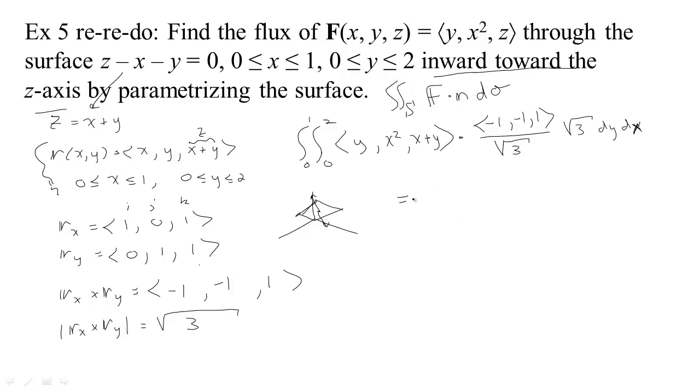So what integral do we actually have to do? Well, the square roots cancel, and I just need to compute this dot product. From 0 to 1 and 0 to 2: y times negative 1 would be negative y, negative 1 times x squared would be negative x squared, and then 1 times (x plus y) would be plus x plus y. We've got to integrate with respect to y and then with respect to x. Notice that the y's cancel, so this is actually a pretty simple integral.